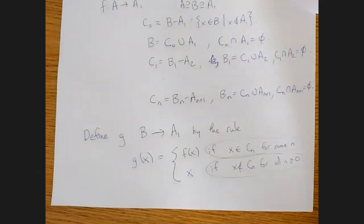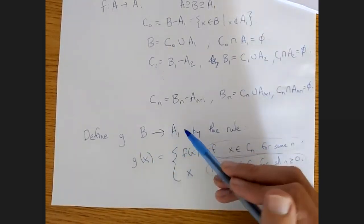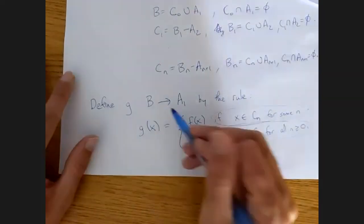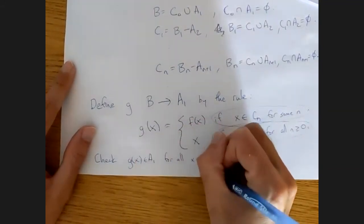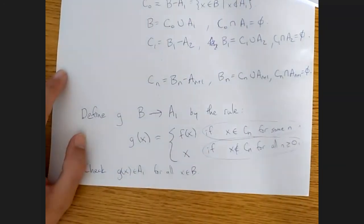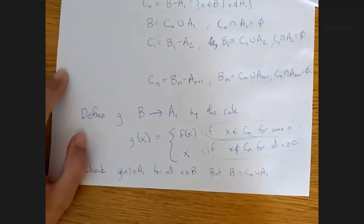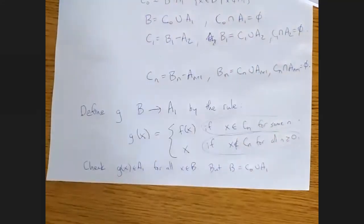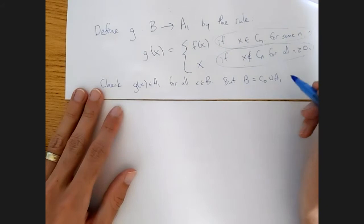So at least as far as these two cases go, they don't cause us to be not well-defined. We have defined g of x for all x in b. The main question is whether g of x is always in a1. So to check if g is well-defined, we need g of x in a1 for all x in b. Notice that b is just the union of c0 and a1. So we just have to check that g of c0 is contained in a1 and g of a1 is contained in a1.